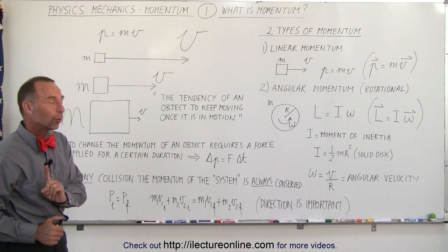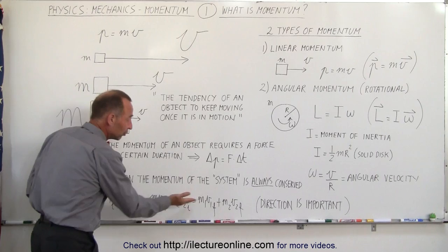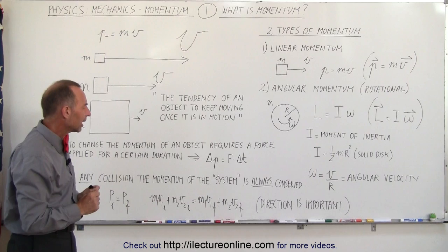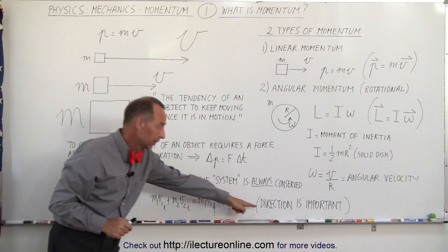Now remember that direction is important because momentum is a vector quantity. When something is moving to the right, we consider that positive direction; when something is moving to the left, we consider that negative direction. When you work out this equation—I'll show you some simple examples later—we have to take into account the sign for the direction.